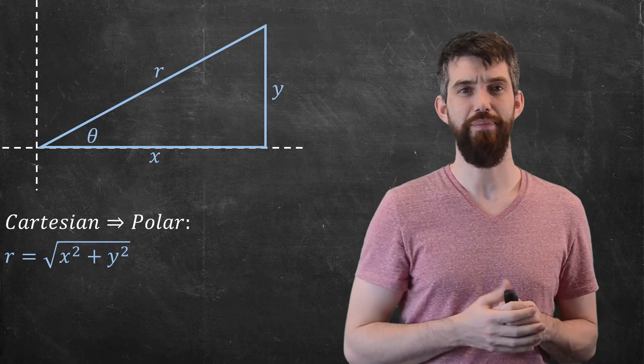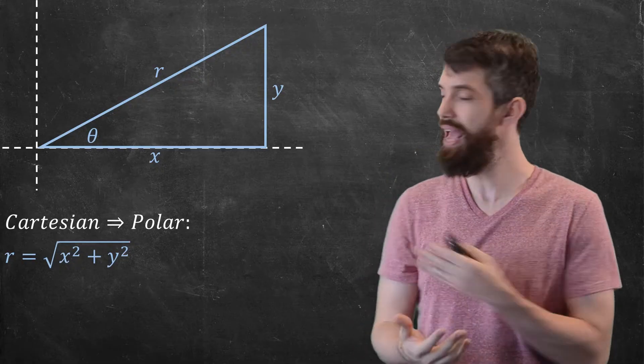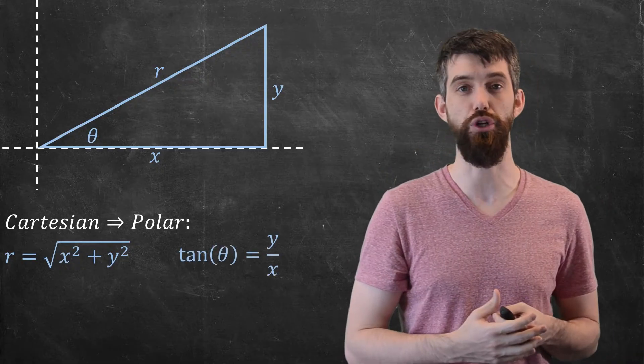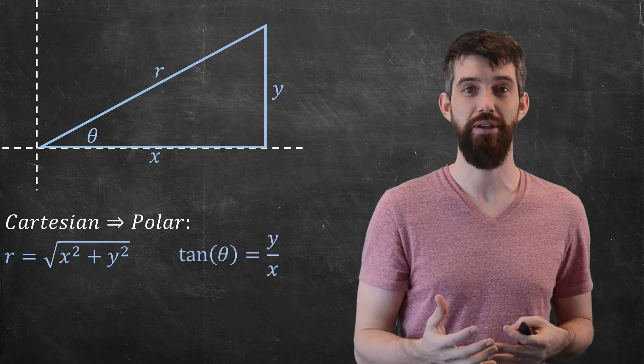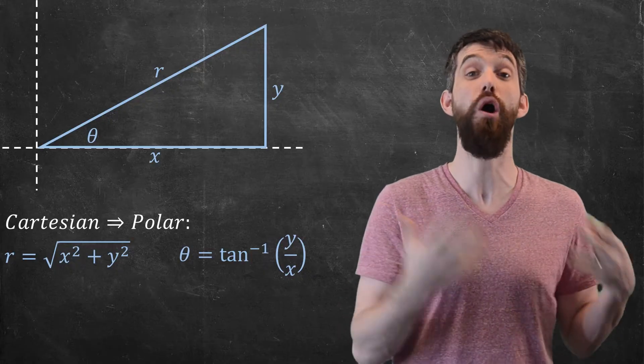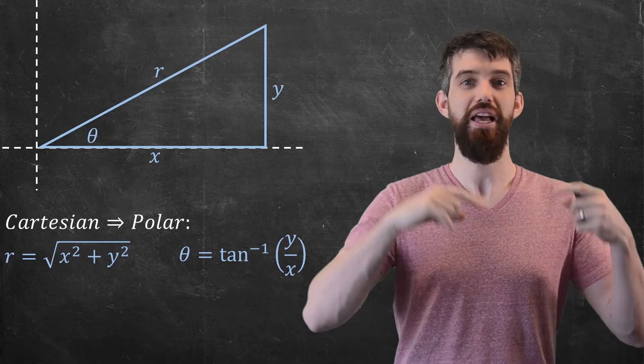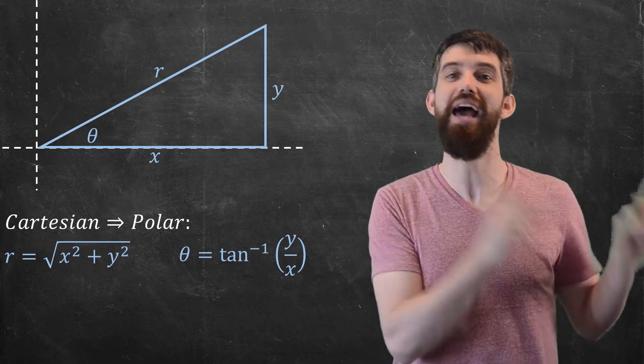What about the theta? Why don't I consider, for example, tangent of theta? Tangent of theta here is just going to be equal to y divided out by x. If you prefer, you could take arctangent of both sides and could rewrite this as θ = arctan(y/x). So this means that if I have an x and y, I can get out the r and the theta.